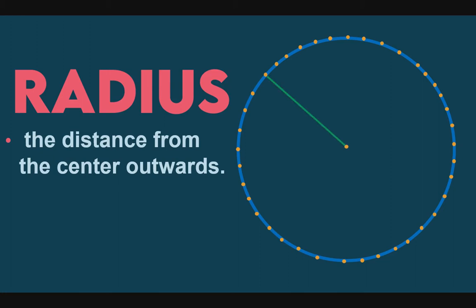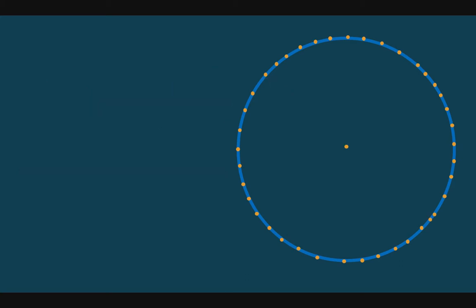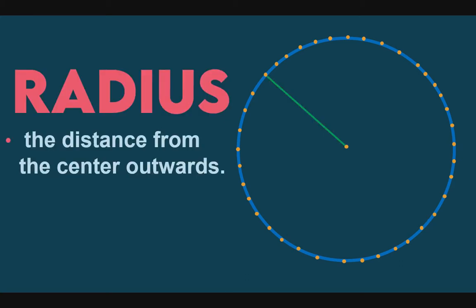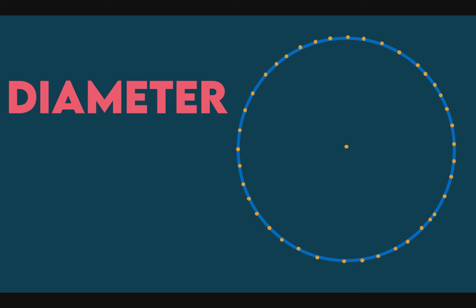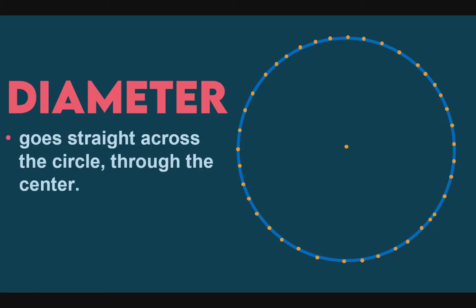Next, radius. Let us define radius. Radius is the distance from the center outwards. So again, from the center outwards. So meaning to say, all of the radius — we can make many radii here — and they are all the same measurement, since it is the distance of points on the circle from the center.